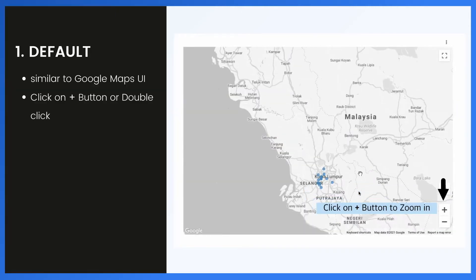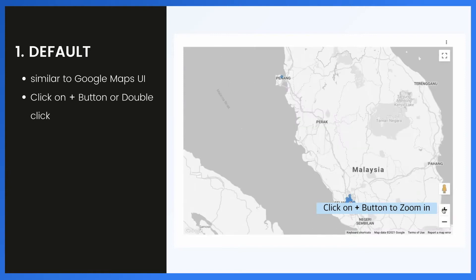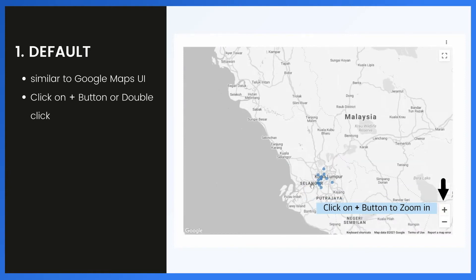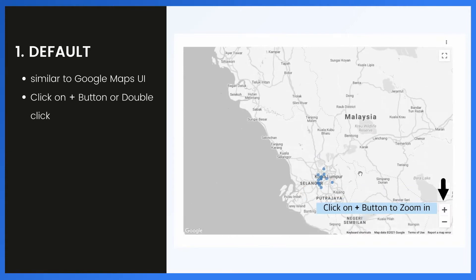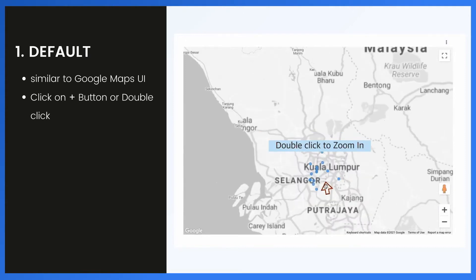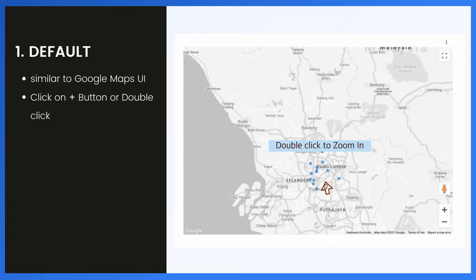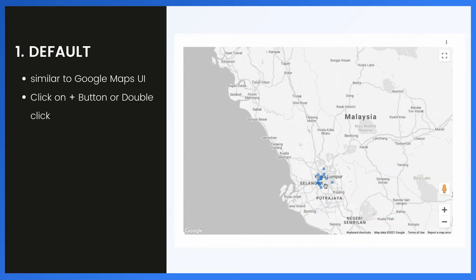By default, to zoom in to a specific area, you could tap on the plus sign on the map located on the bottom right of the map visual. Alternatively, you could double-click on the map to zoom in closer to a specific area. This is very similar to the Google Maps user interface.